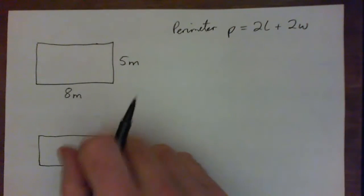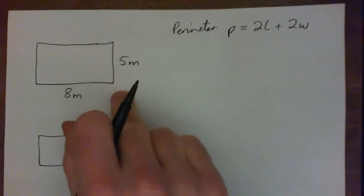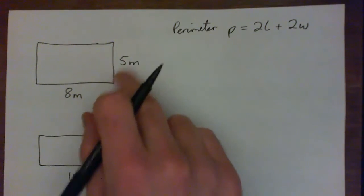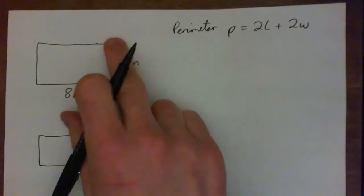Okay, so we'll start with this first one. The most common mistake is to just add 8 and 5 and get 13, or multiply them and get the area, which is 40 square meters. The area is 40 square meters.